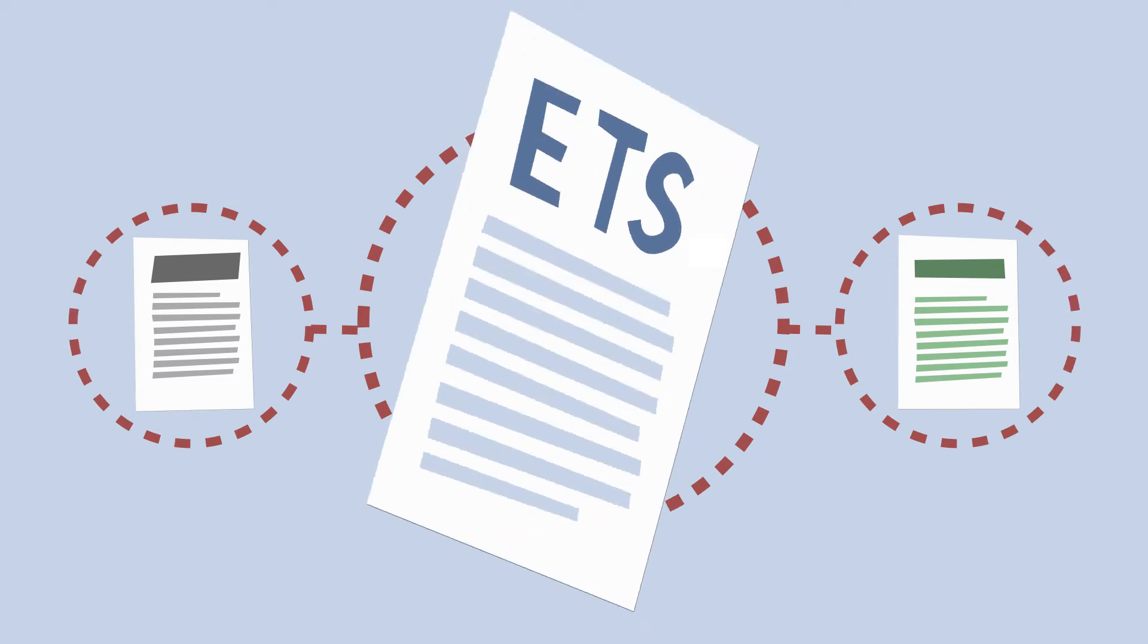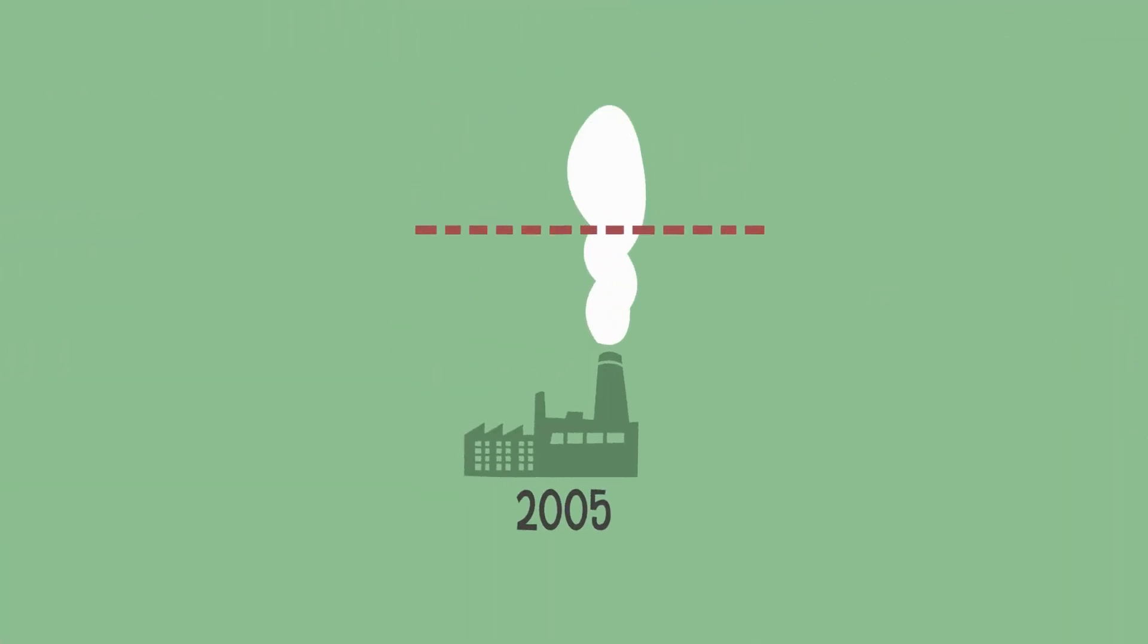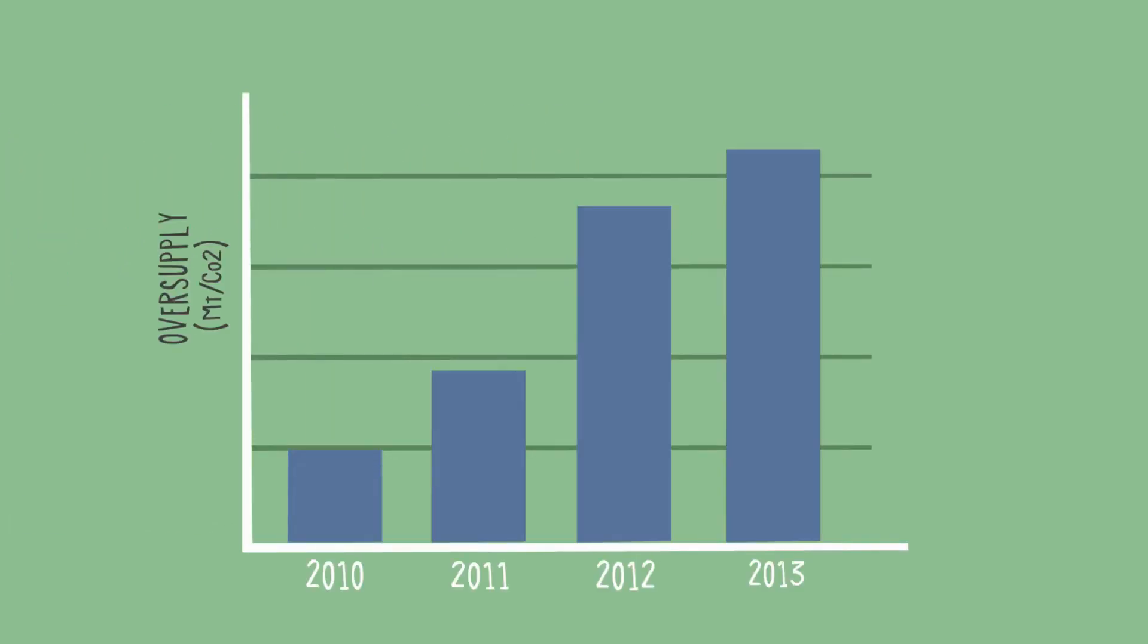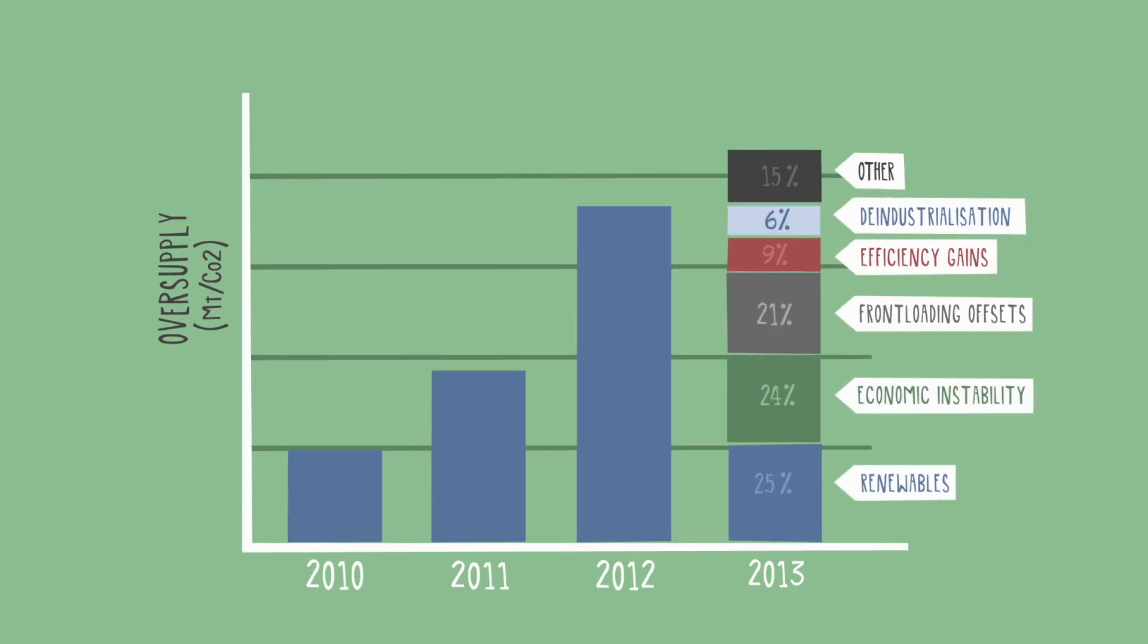The ETS is designed to reduce emissions to below 21% of 2005 levels by 2020. The ETS has all but met this goal already, as external factors such as high fuel prices and other policies helped reduce emissions. More allowances were created than needed, increasing oversupply and depressing the carbon price.